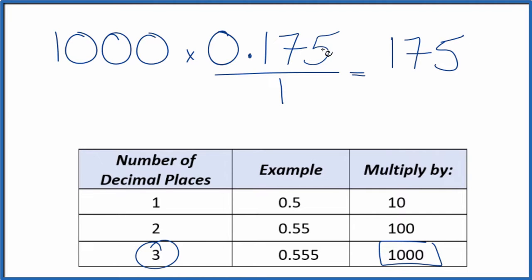But we can't just multiply the numerator. We also need to multiply the denominator by a thousand. Thousand divided by a thousand is one, so we're just multiplying by one. We don't change the value, just the way it's represented. So a thousand times one, that is one thousand.